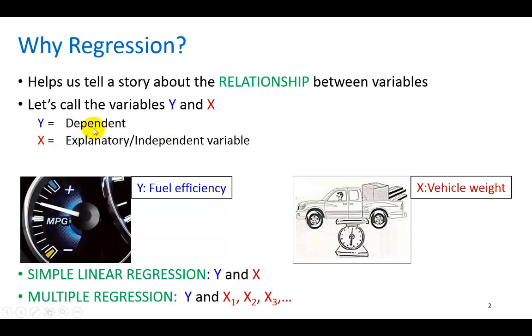The dependent variable Y is the variable we're interested in learning about. For example, we may be interested in learning about the fuel efficiency of vehicles. X, on the other hand, is the variable we believe might help explain the behavior or the variation in Y. An example in this context would be the weight of a vehicle. So we think perhaps that fuel efficiency is influenced by the weight of the automobile.